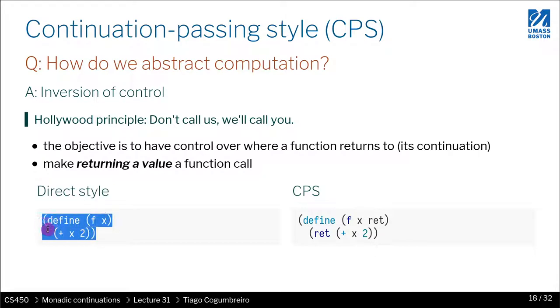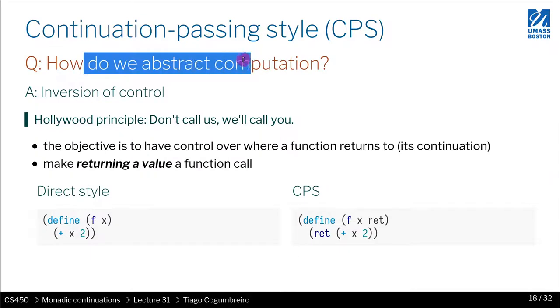Consider the following code highlighted in blue on the left-hand side. So here we have a function f that takes the parameter x and calculates x plus 2. That's the return value. So essentially, if you execute this function, you want to return x plus 2. Instead of returning directly, we want, in the continuation passing style, there is an extra parameter, that is the return function. And when you want to return a value, you call that function rather than returning directly. And this is abstracting, this is more abstract, it's abstraction of control flow.